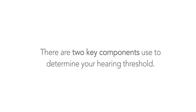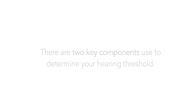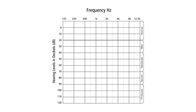There are two key components of the audiogram used to determine your hearing threshold. First, we have the frequency. The frequency is measured from left to right in hertz, from the deepest frequency to the highest frequency.